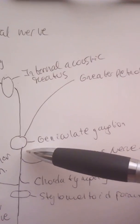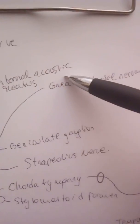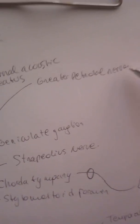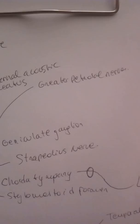This nerve will go down and will form the geniculate ganglion that will give away the greater petrosal nerve, parasympathetic from the facial nerve.